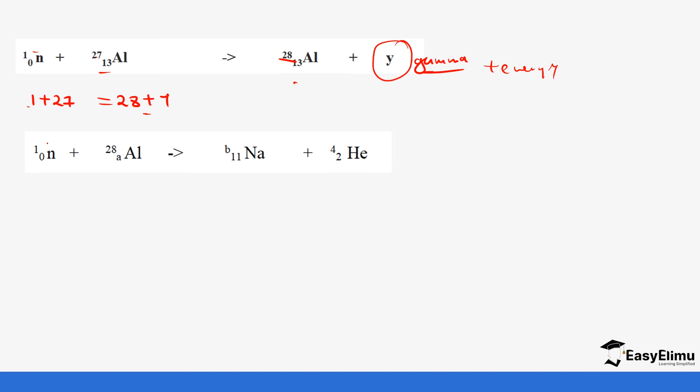And then we have this nuclei bombarding aluminium again but now this is aluminium 28. So we need to look for the value of a and b and we also have a helium that is given off. So we are going to say it's 1 plus 28 is equals to the product which is b plus 4. This is 29 is equals to b plus 4. So this is the same as 29 minus 4 which gives us 25. So b is going to be 25. And then for a is going to be 0 in the reactant plus a is equals to 11 plus 2. So a is equals to 11 plus 2 which is 13. So a is 13.